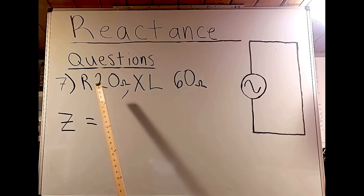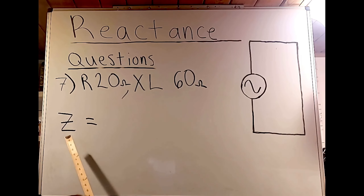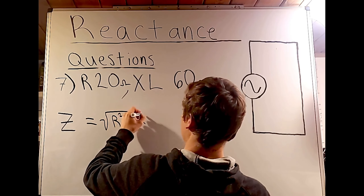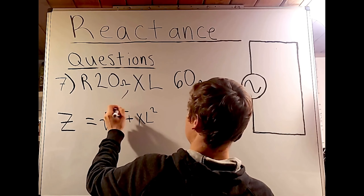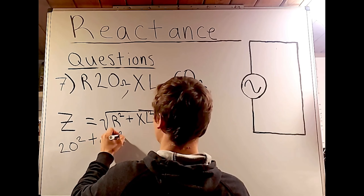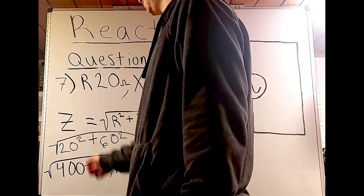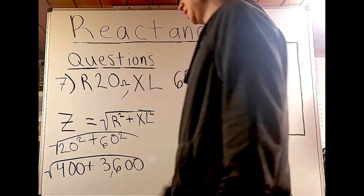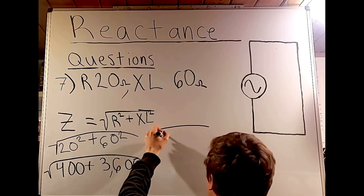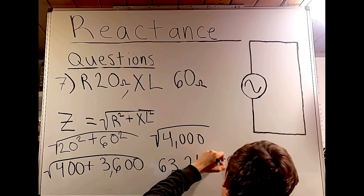Question: circuit with resistance of 20 ohms and inductive reactance of 60 ohms — what is impedance? Formula: Z = √(R² + XL²) = √(20² + 60²) = √(400 + 3600) = √4000 = 63.246 ohms... calculated as 63.246 ohms.